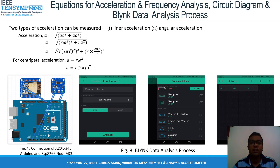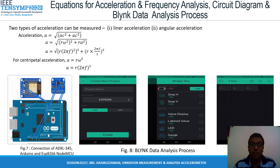In this slide, the equation for acceleration and frequency analysis, circuit diagram, and Blynk data analysis process are given. Two types of acceleration can be measured: linear acceleration and angular acceleration. The acceleration and centrifugal acceleration equations are given here. In Figure 7, the proper implementation method of the ADXL345 accelerometer and the connection between Arduino and ADXL345 is given. The model is formatted on a surface with 3.3-volt operation and 3-axis sensing, increasing accuracy in comparison to a traditional 1-axis accelerometer. The ADXL345 detects the data, the microcontroller Arduino receives the data, and by serial communication the data is sent to the server via ESP8266 NodeMCU.